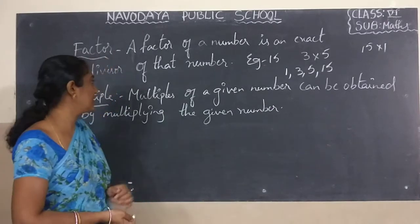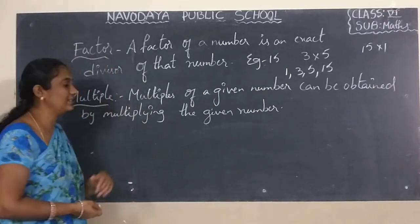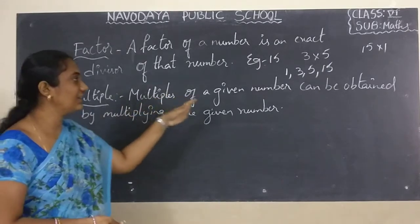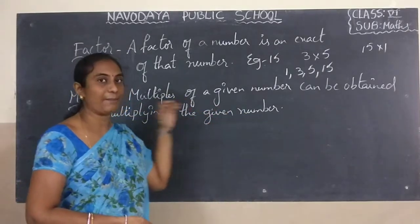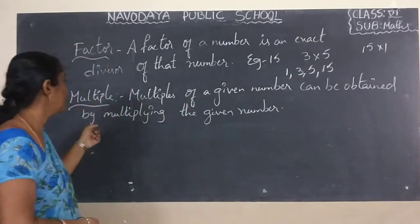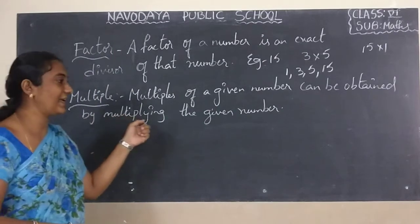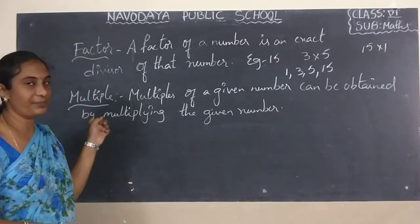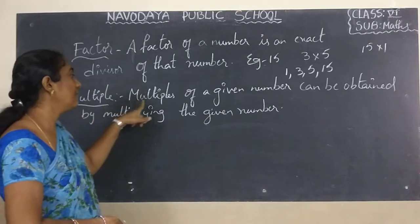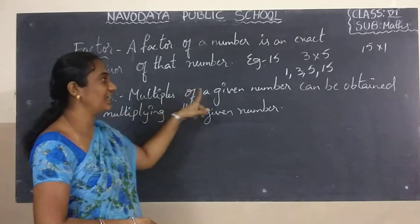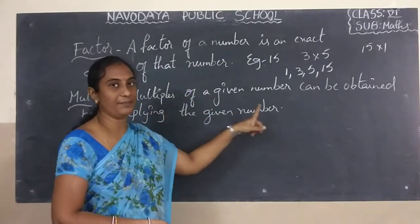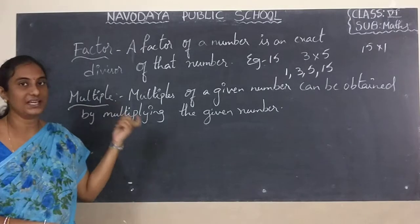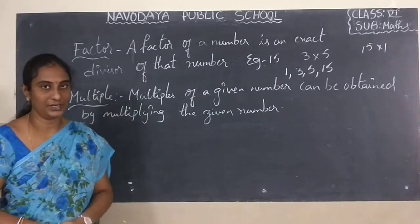The next topic is multiples. What is the definition for multiples? Multiples of a given number can be obtained by multiplying the given number.